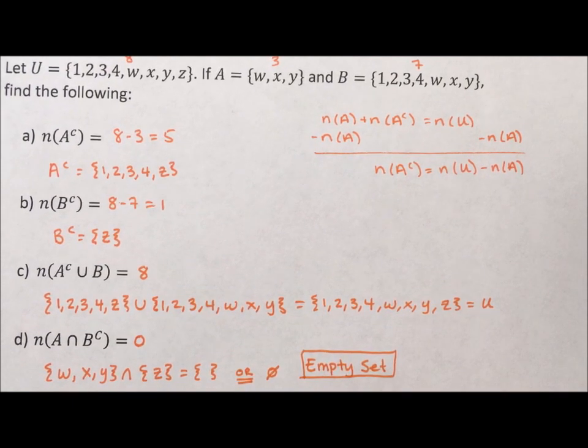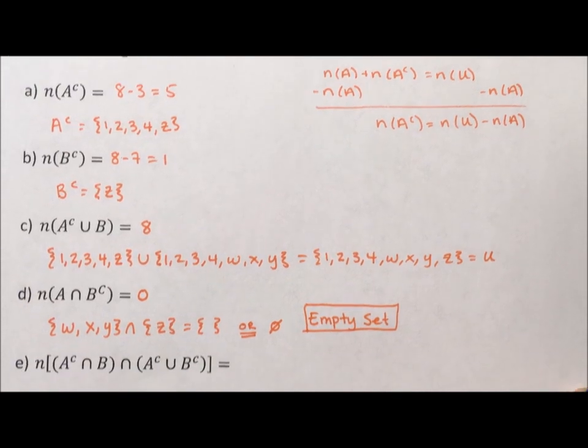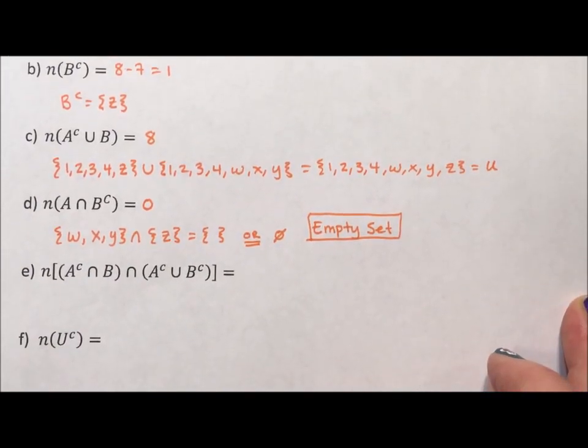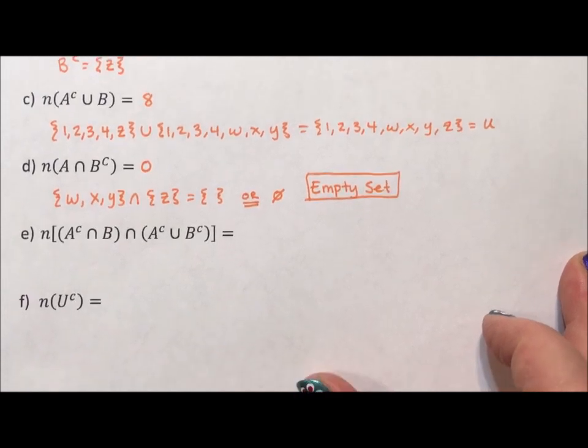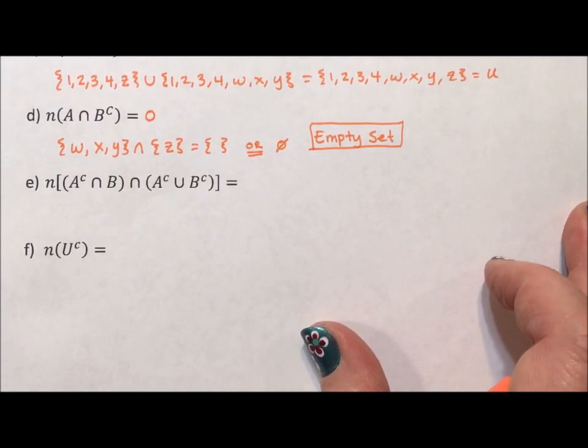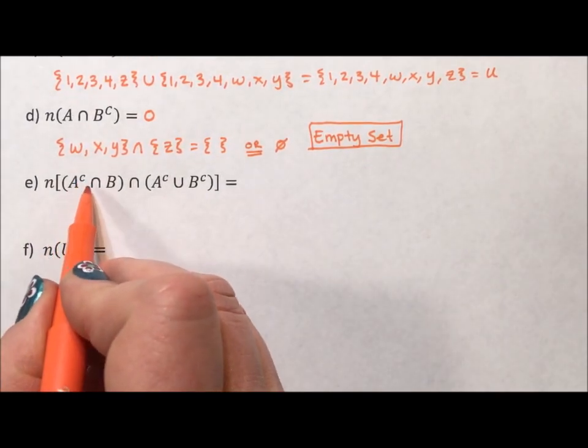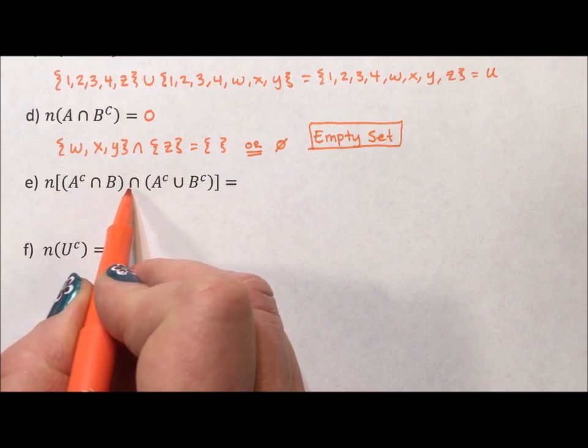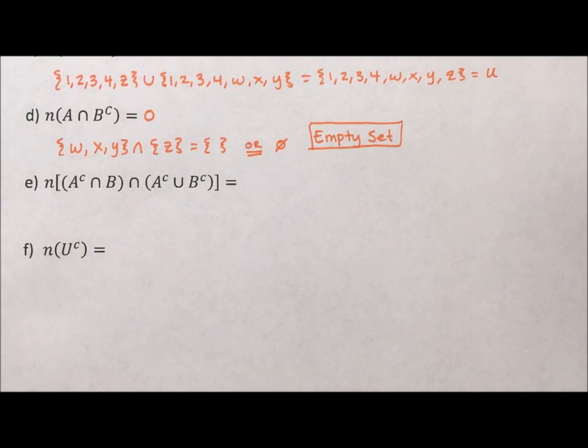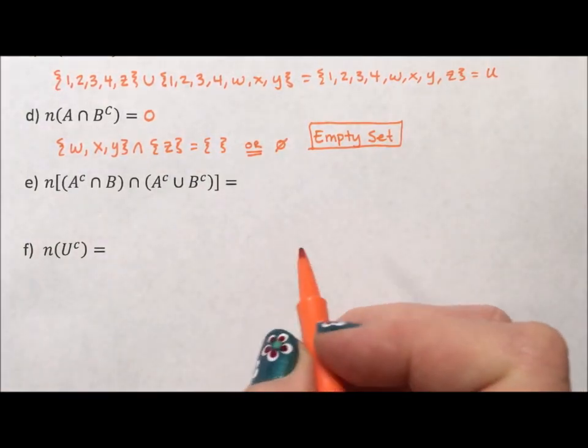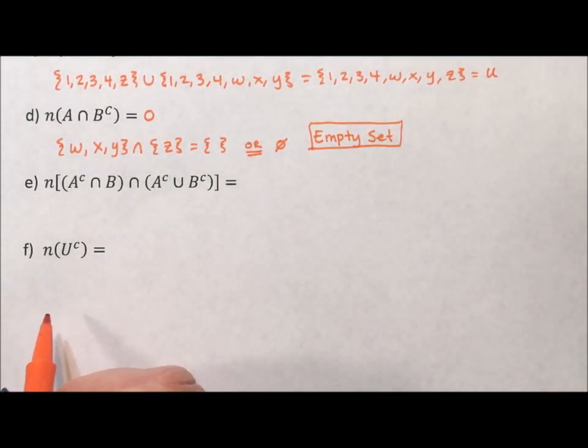So, my next one, there's two more on this page, is a bit longer. So, it has A complement intersection B, intersection A complement union B complement. Okay, so there's a lot going on there. So let's start with, and I'm going to do the work down here, A complement intersection B.